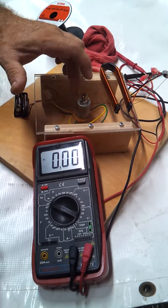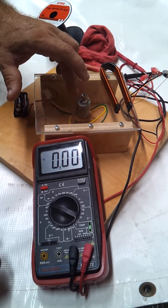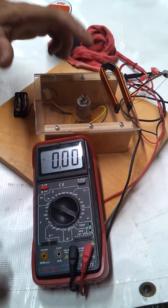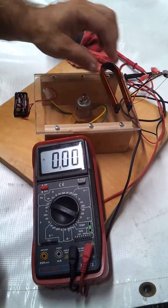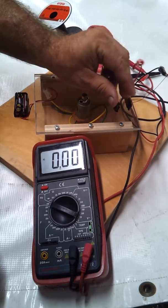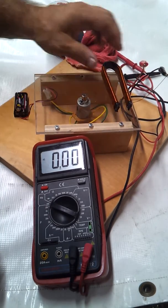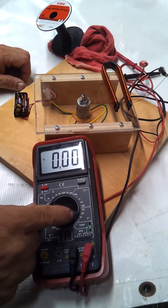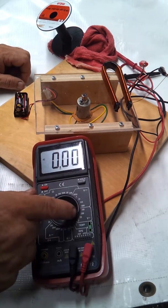I don't know how many RPM this runs at, maybe 2000, maybe. I'm not sure. But, okay, well, let me, and this is set on 20 AC volts.